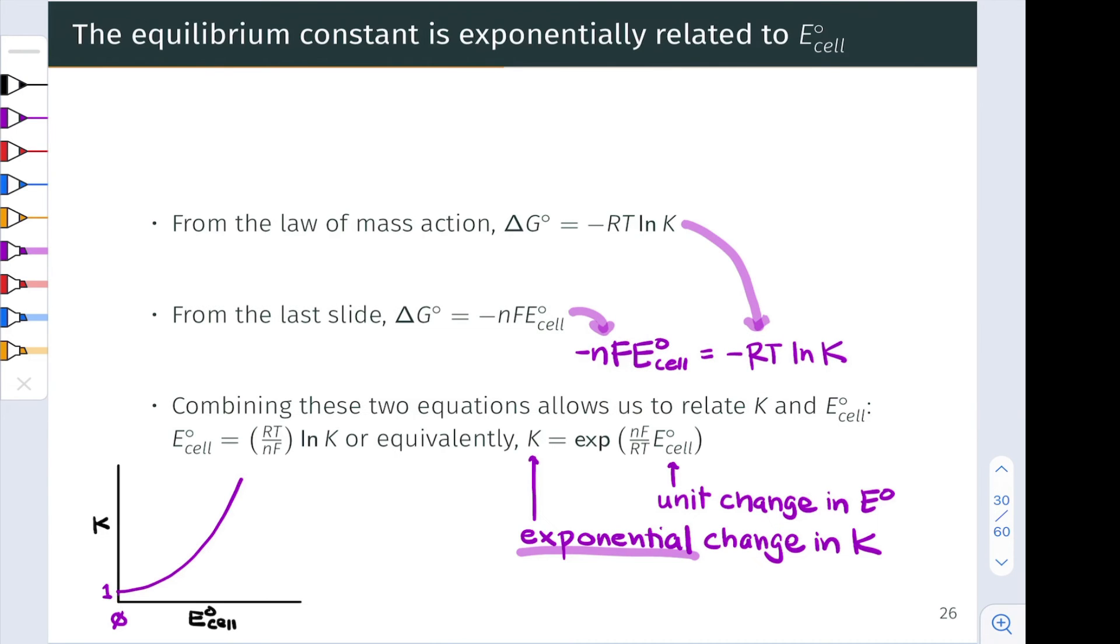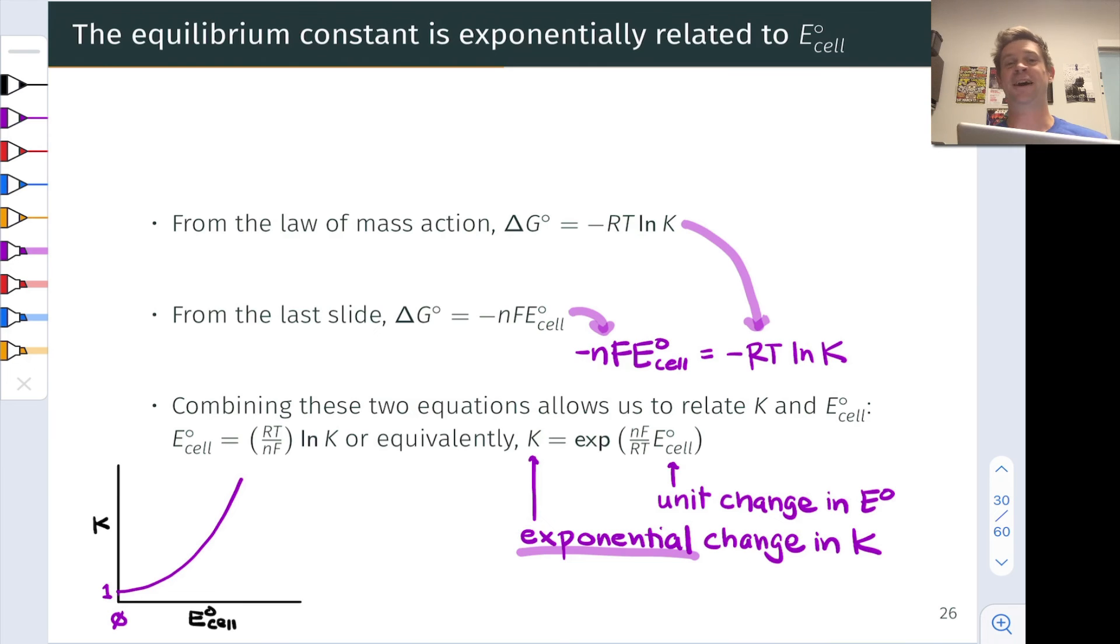In practice, this means a galvanic cell can't really be associated with the voltage more than about five volts or so. Because once you get beyond about five volts, you're looking at an extremely favorable redox reaction with a very high K value. And our assumptions of ideality and all of the idealness that comes along with chemical thermodynamics starts to break down.